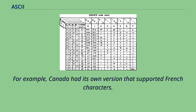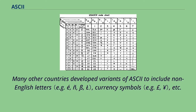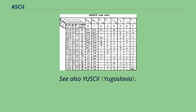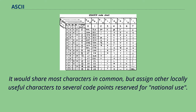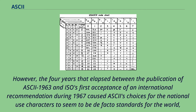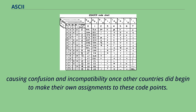Many other countries developed variants of ASCII to include non-English letters, currency symbols, etc. These would share most characters in common, but assign other locally useful characters to several code points reserved for national use. However, the four years that elapsed between the publication of ASCII 1963 and ISO's first acceptance of an international recommendation during 1967 caused ASCII's choices for the national use characters to seem to be de facto standards for the world, causing confusion and incompatibility once other countries did begin to make their own assignments to these code points.